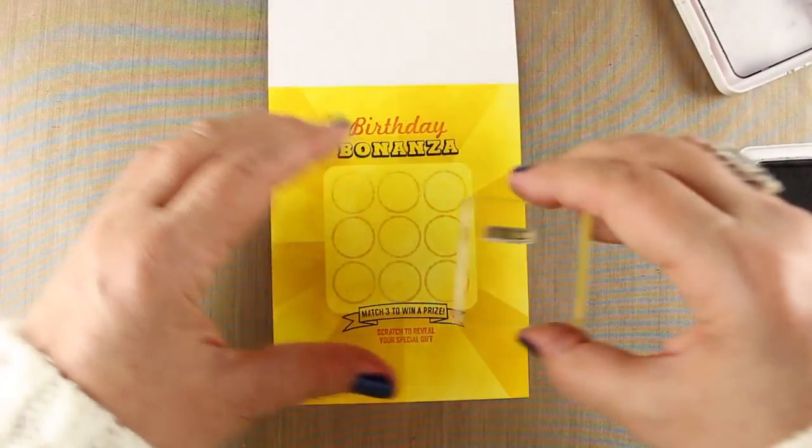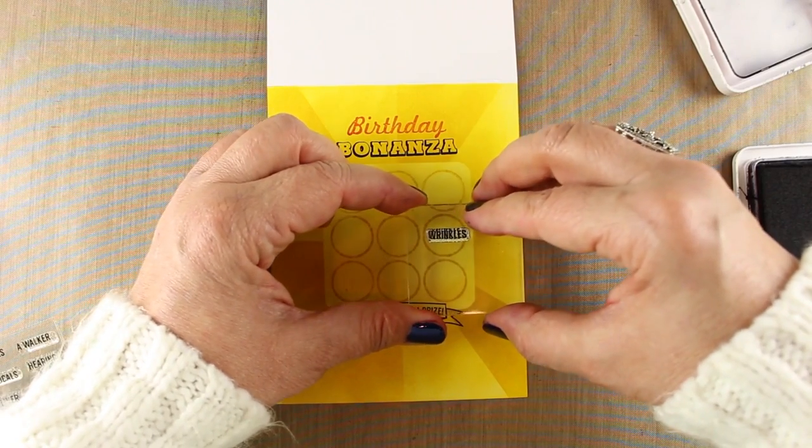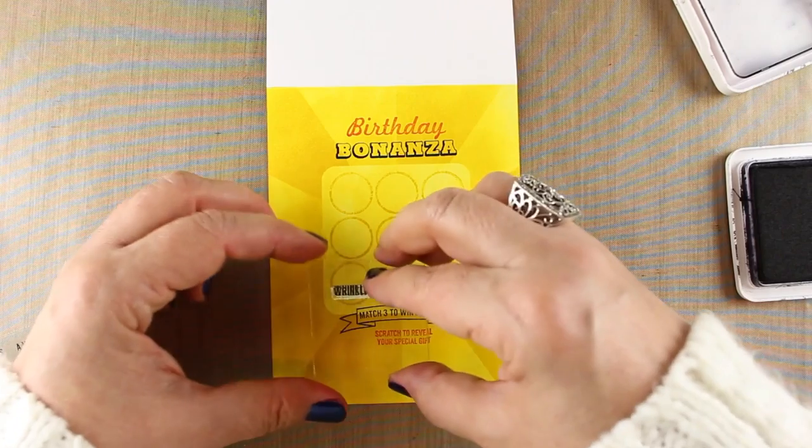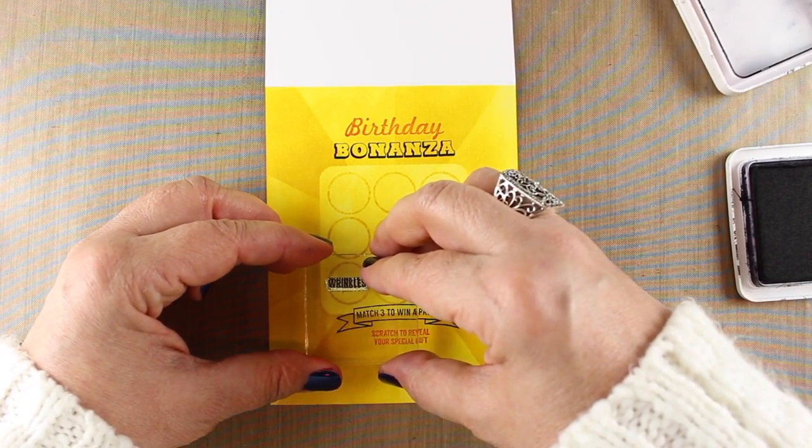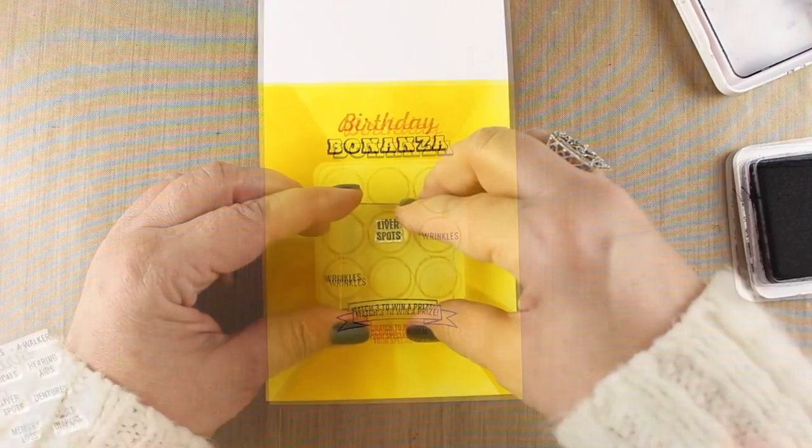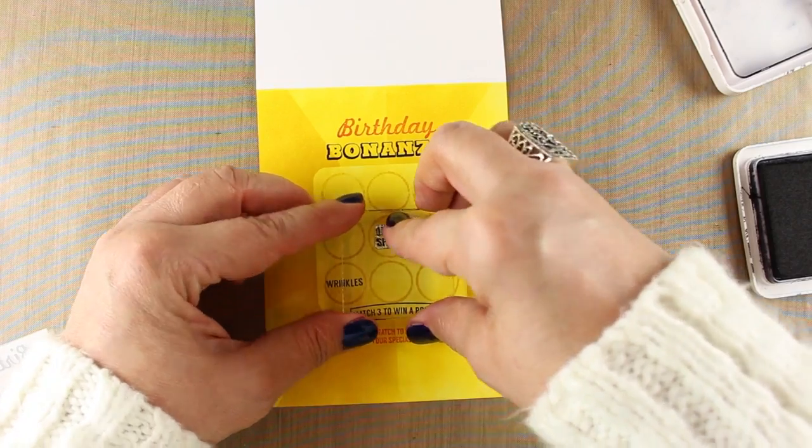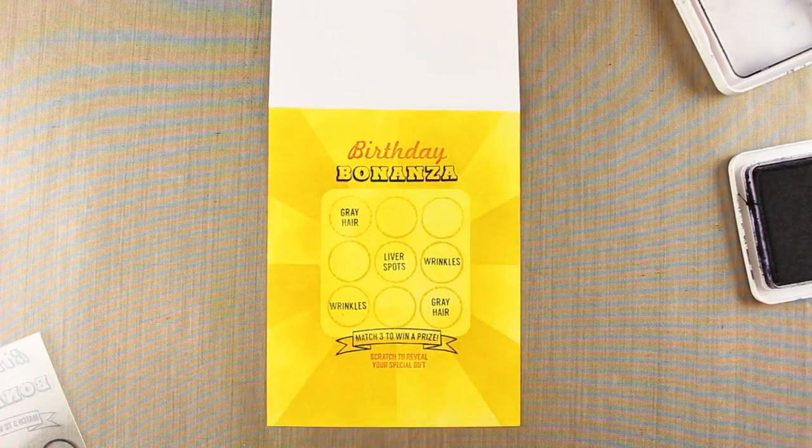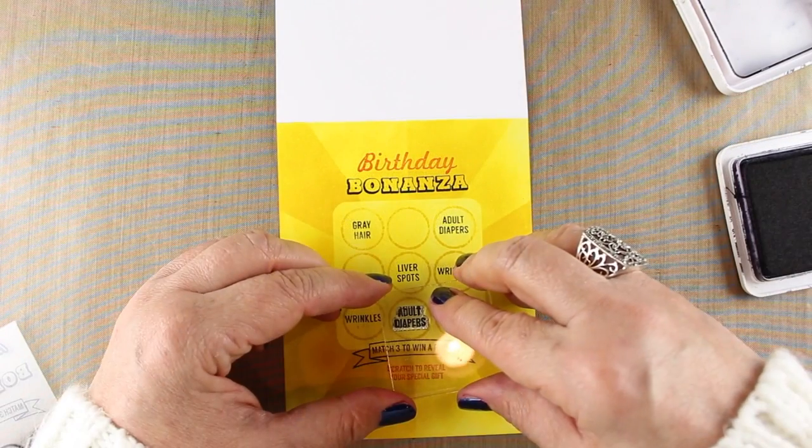And now I wanted to add the stuff in the little circles. Now I could have used the MISTI for this, but I realized it was really not a big deal. They're just going to scratch these off, so it's not like anybody's going to go, oh my gosh, they're crooked, because you're not going to see them on the card until they're scratched off. And then it would be a scratched off mess, so I just did these by hand and eyeballed them. And they're not all straight, but that's okay.